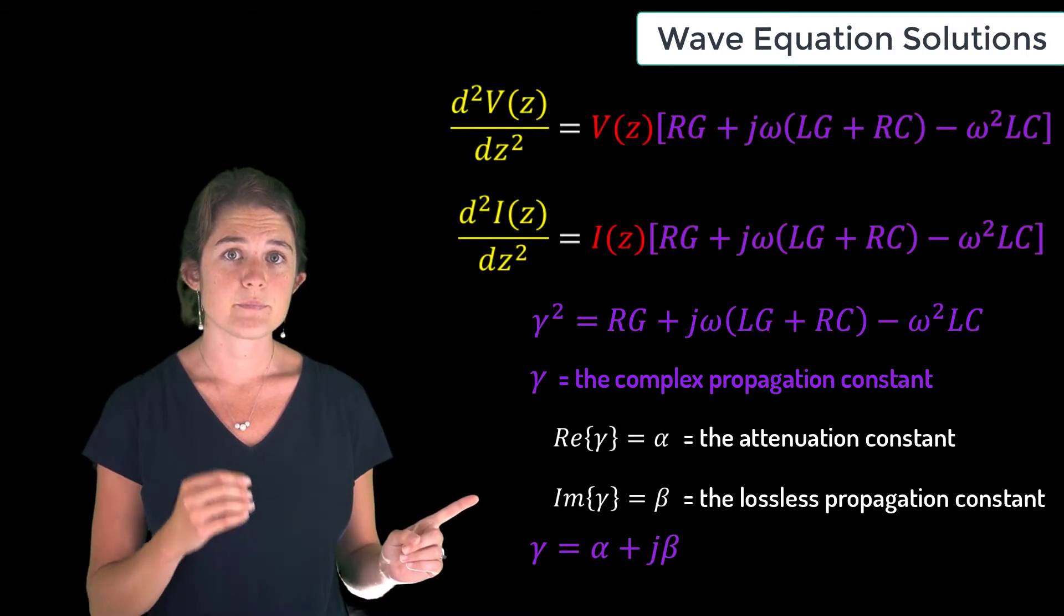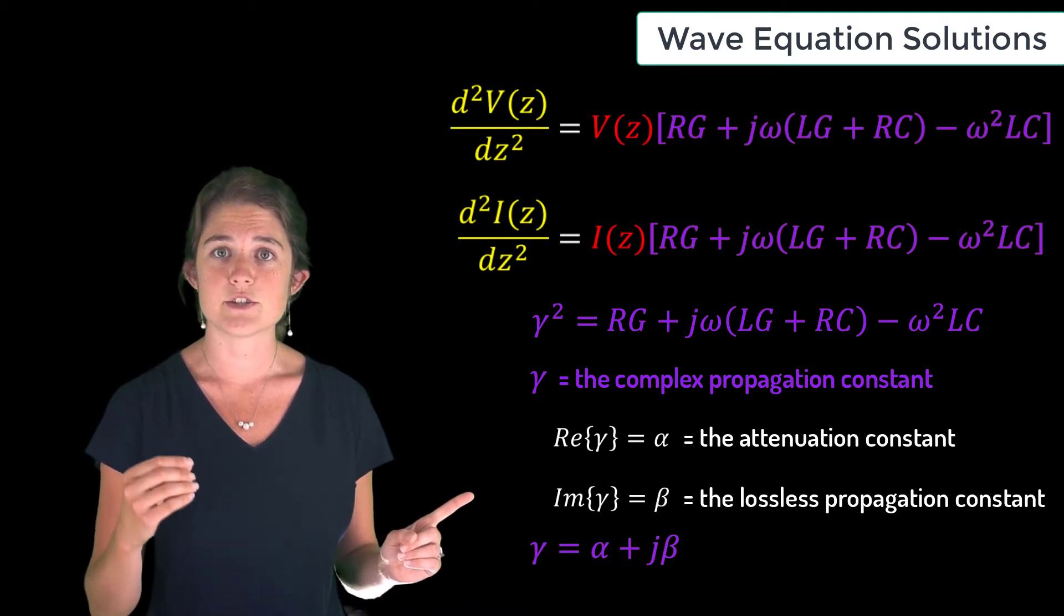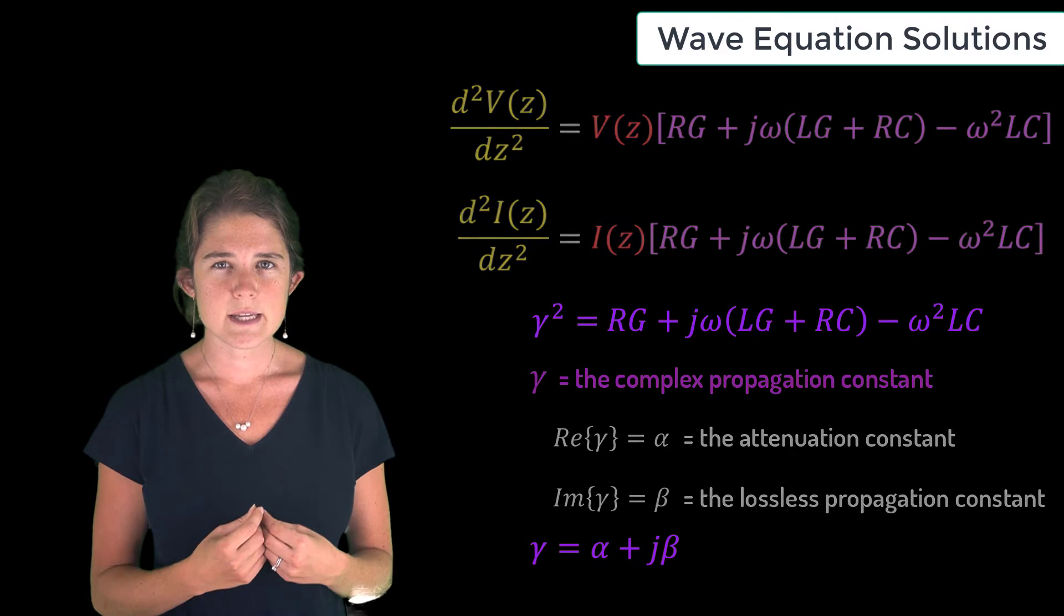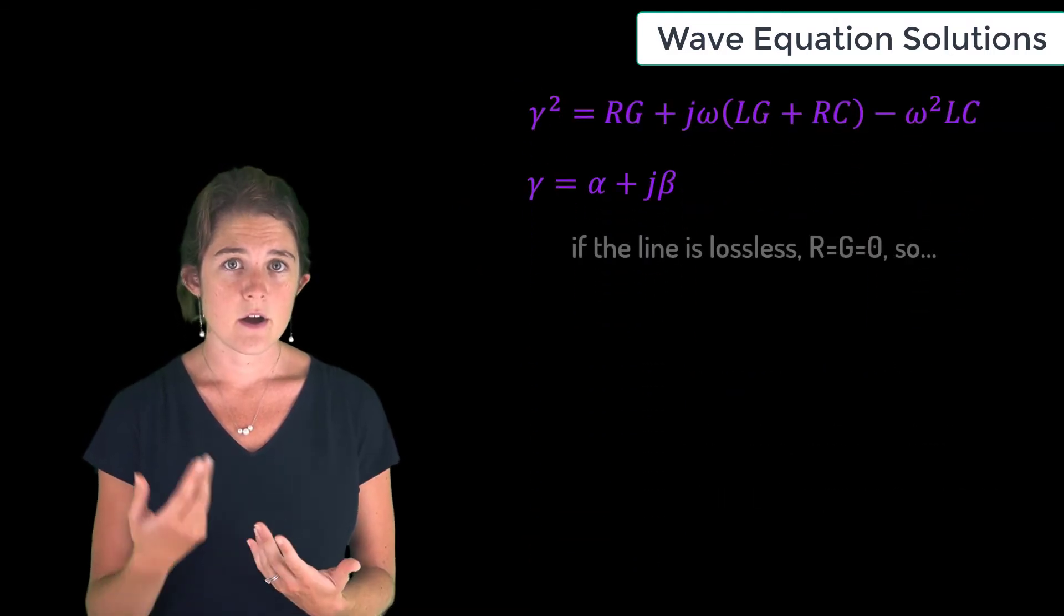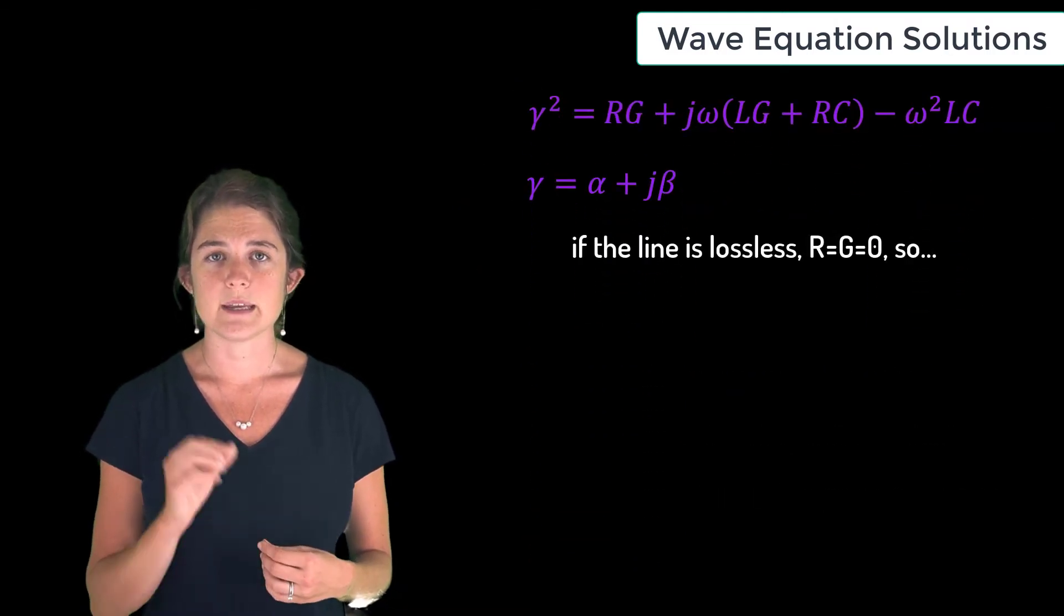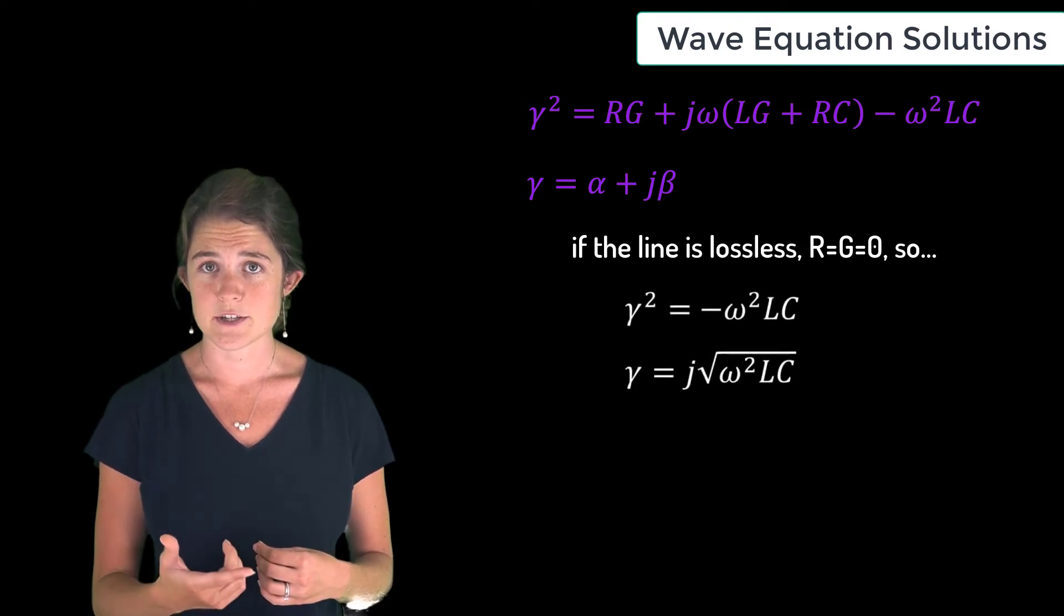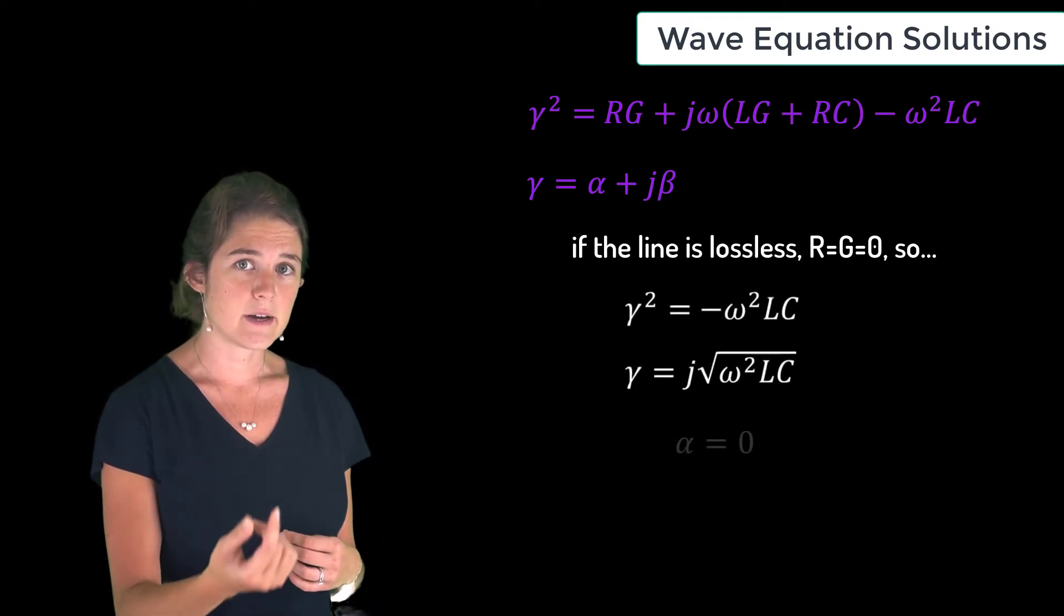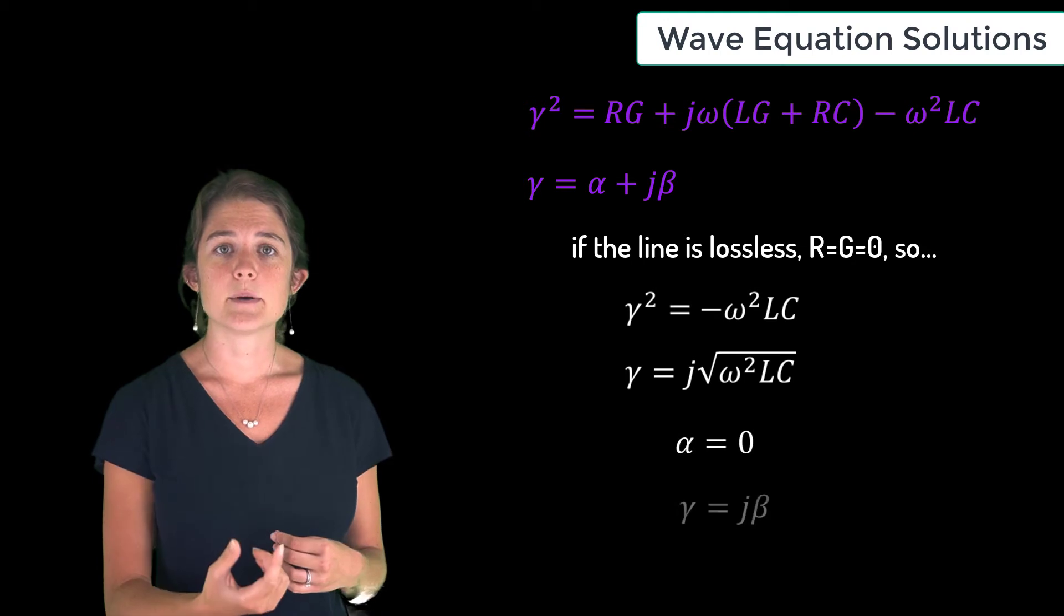be expressed like this: gamma equals alpha plus j beta. Notice again that if the line is lossless, R and G both go to zero and gamma becomes purely imaginary. In that case, alpha equals zero and gamma equals just j beta, where beta is omega times the square root of LC.